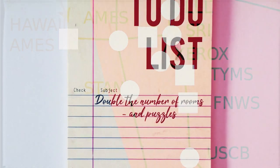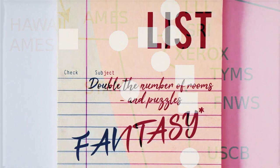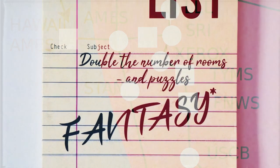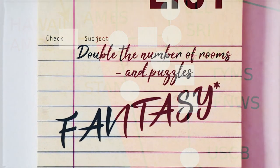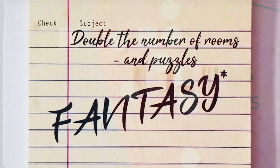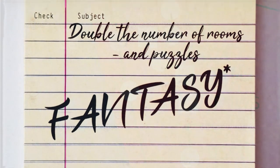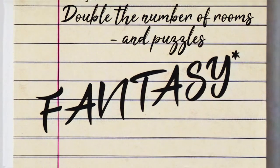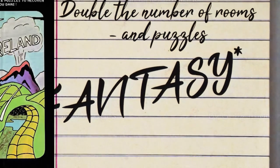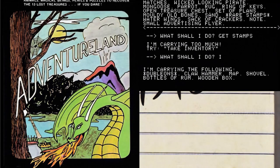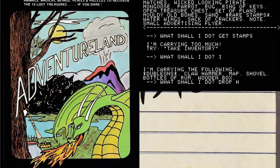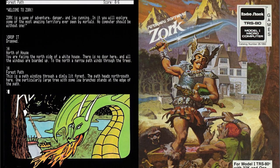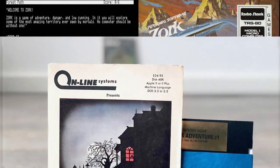Woods expanded the game to encompass more than double the number of rooms and puzzles and transformed it into a loose fantasy world. Woods and Crowther can thus in a sense be considered some of the progenitors of the entire genre of computer adventure games and interactive fiction. Colossal Cave directly inspired the creation of the adventure game genre — games such as Adventureland by Scott Adams, Zork by Infocom, and Mystery House by Ken and Roberta Williams of On-Line Systems.